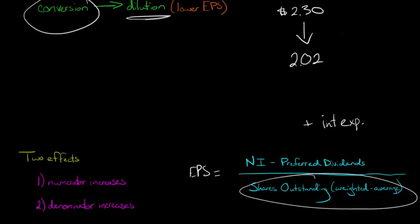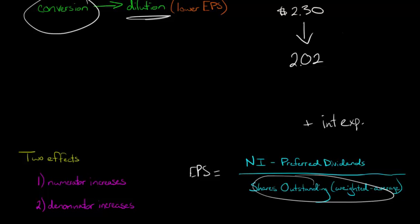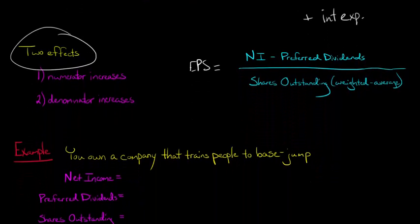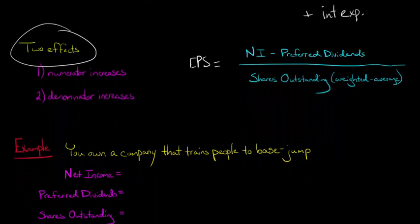But the denominator is also going to go up. And why? Because the denominator is just the number of common shares outstanding, and that's obviously going to increase if a bunch of debt holders all of a sudden say, hey, we don't want debt, we want common shares outstanding. So then the common shares outstanding is also going to increase. So those are the two effects that we have when we use the if-converted method. So let's walk through an example and see how this would all play out.